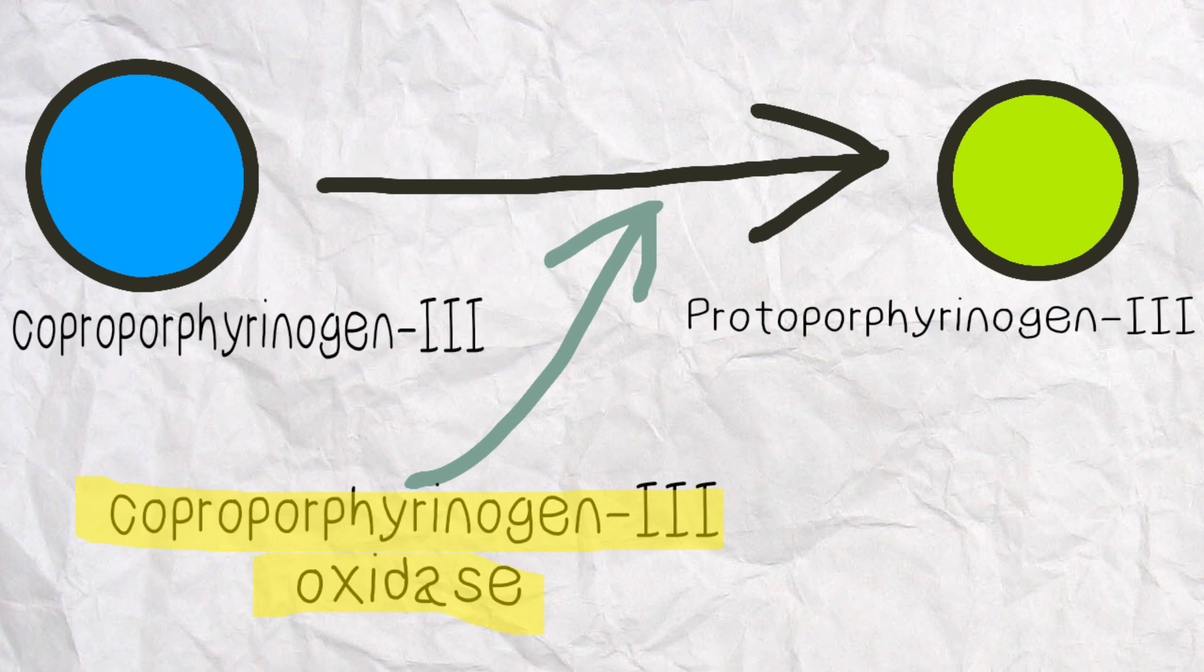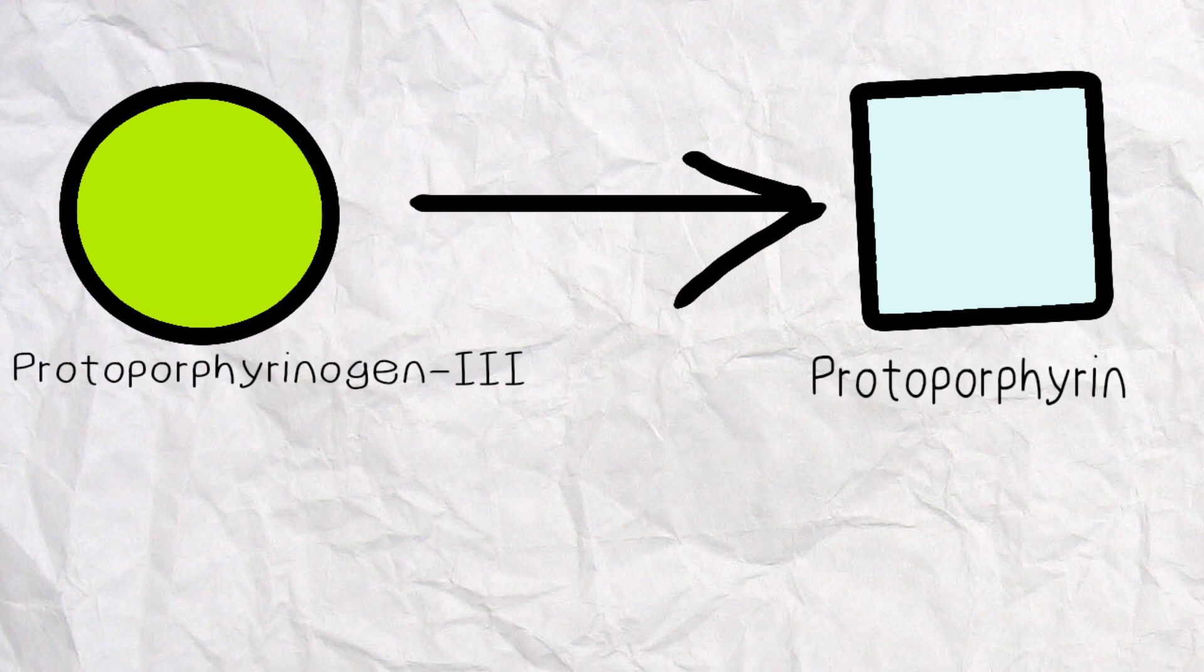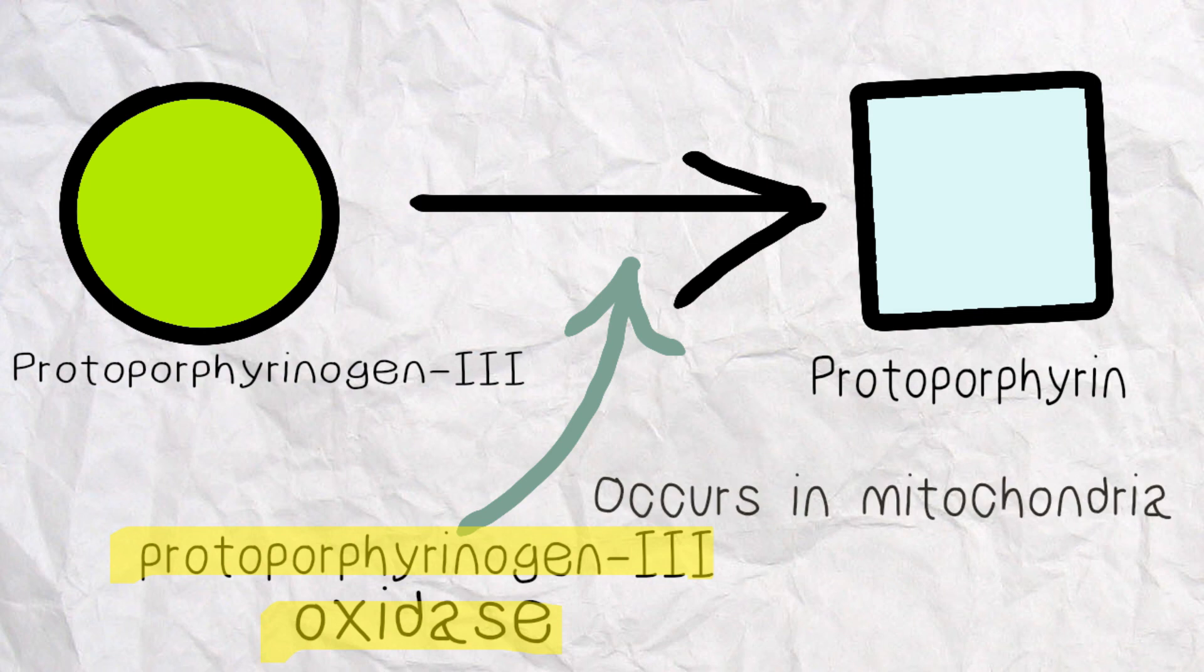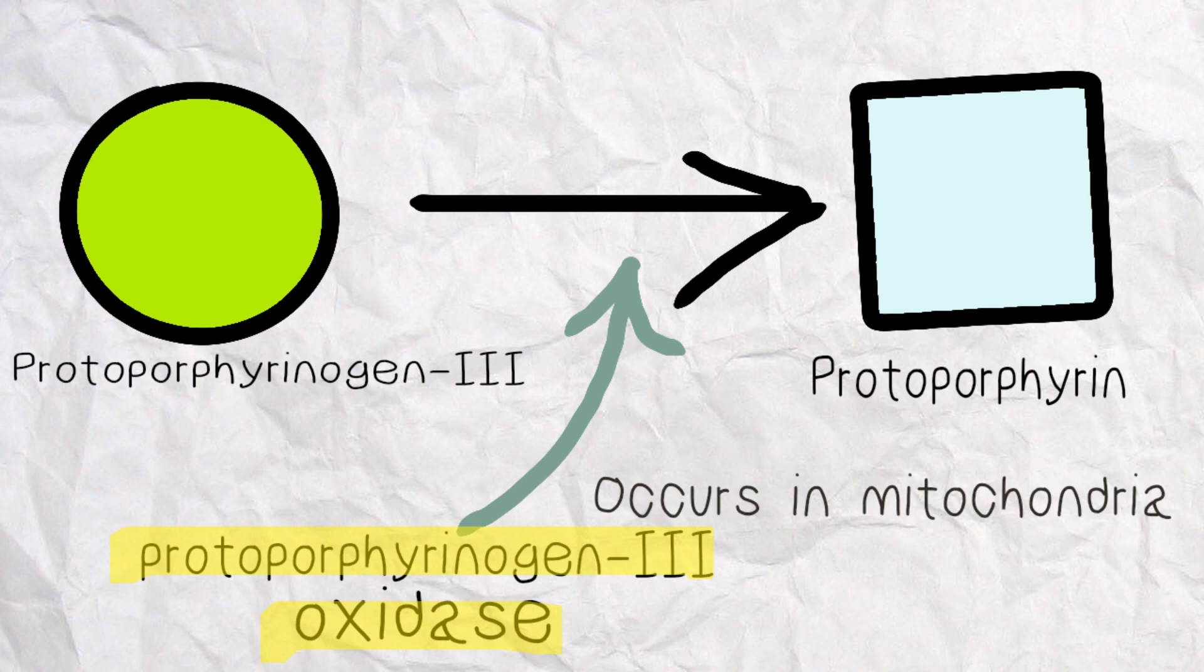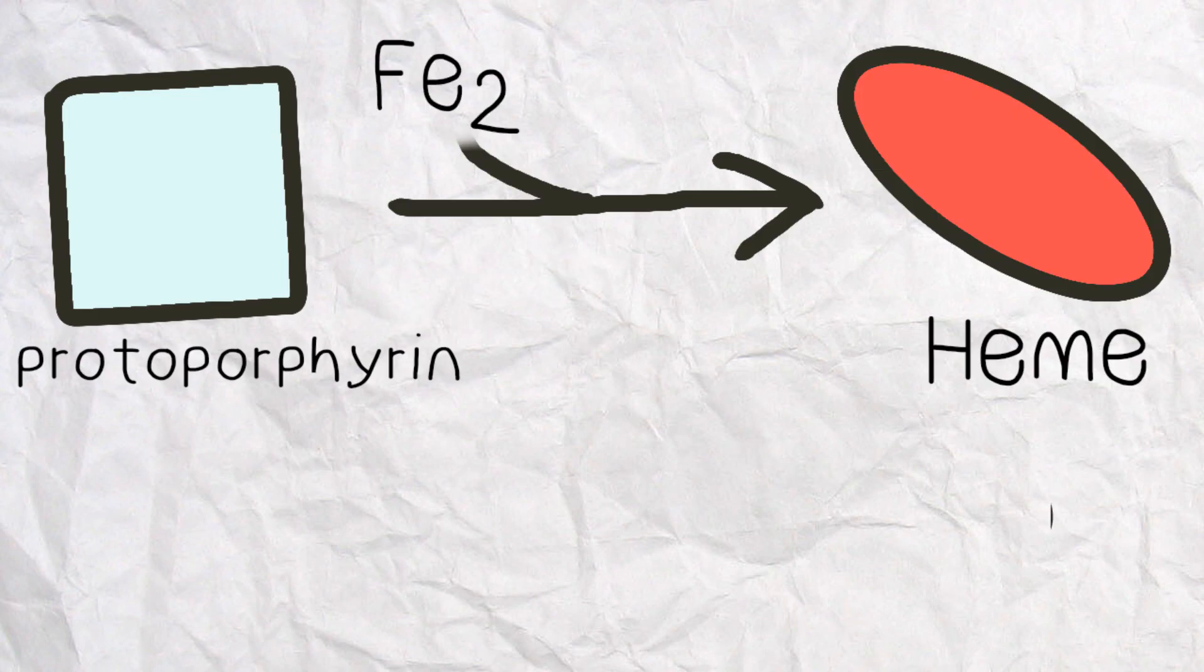Step 7: Protoporphyrinogen-III will convert into protoporphyrin-IX with the help of protoporphyrinogen-III oxidase. And finally, protoporphyrin and iron will together form heme with the help of ferrochelatase.